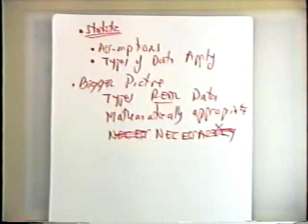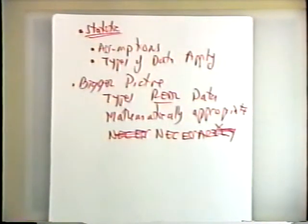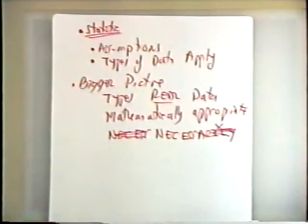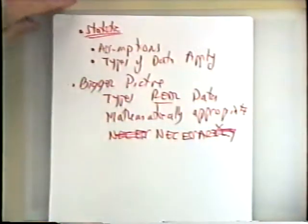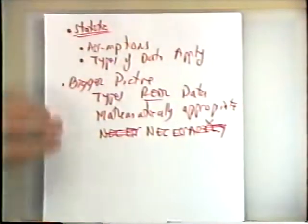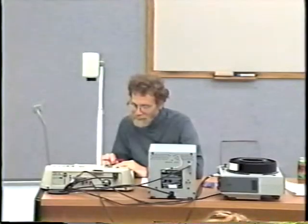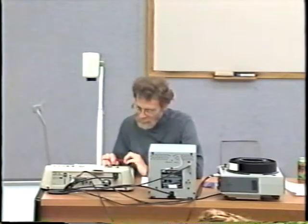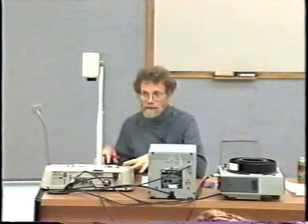So what I've been trying to do in the whole semester is to develop not only the statistics that some of you have had before, but also to place that in perspective in terms of their assumptions—which usually aren't made clear—and the types of data that they apply to. And to give you a sense of what a bigger picture is, in terms of types of properties we see in real data and the types of mathematical approaches that are necessary in order to handle things. So are there any questions on chaos, or on broader perspectives of what we've been doing?